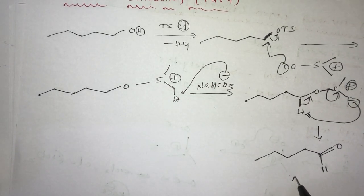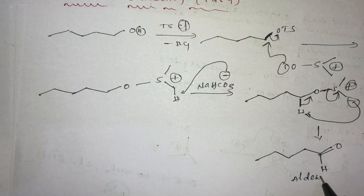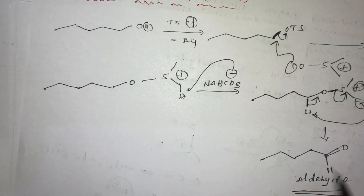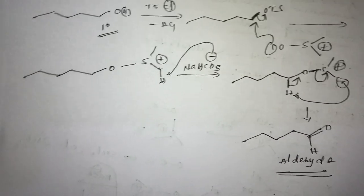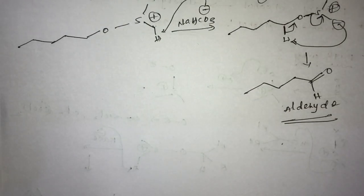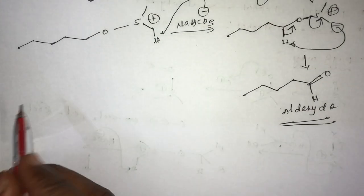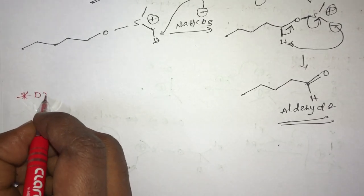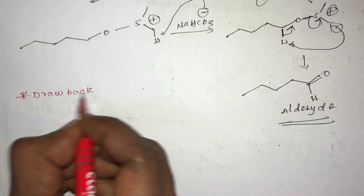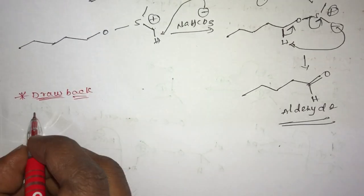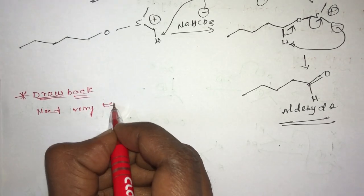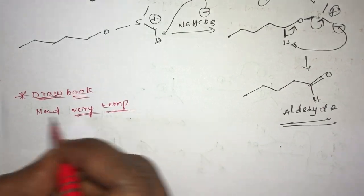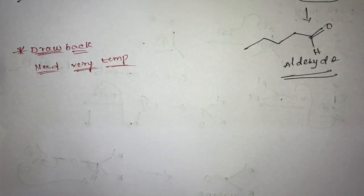Finally you get the product as an aldehyde. Since we took a primary alcohol, the product is an aldehyde. However, there is a drawback to this reaction — it needs very high temperature. Because of this drawback, another reaction was introduced.